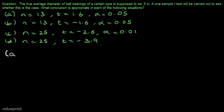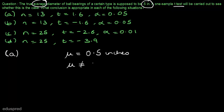Let's start with situation A. We are given that the true average diameter of ball bearings of a certain type is supposed to be 0.5 inches, so mu is equal to 0.5 inches. A one-sample t-test will be carried out to see whether this is the case. This is the claim, and the alternate claim will be mu not equal to 0.5 inches. As this claim has an equal-to sign, this is our null hypothesis, and the other claim is our alternative hypothesis.